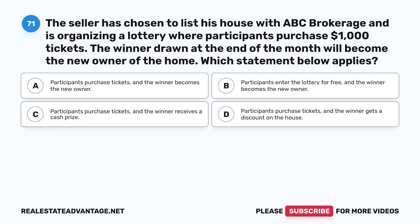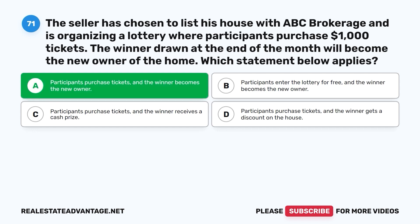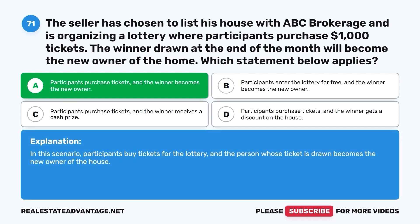Question 71. The seller has chosen to list his house with ABC Brokerage and is organizing a lottery where participants purchase $1,000 tickets. The winner drawn at the end of the month will become the new owner of the home. Which statement below applies? A. Participants purchase tickets and the winner becomes the new owner. B. Participants enter the lottery for free and the winner becomes the new owner. C. Participants purchase tickets and the winner receives a cash prize. D. Participants purchase tickets and the winner gets a discount on the house. The correct answer is A. Participants buy tickets for the lottery, and the person whose ticket is drawn becomes the new owner of the house.